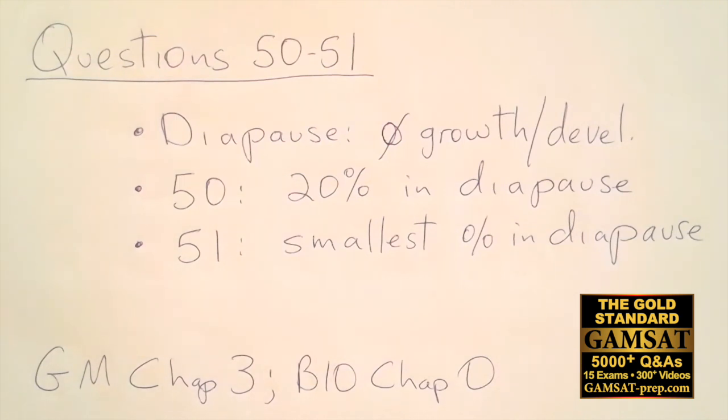Then for question 51, asking what is the largest percentage of fly population that grow and develop. Of course, 51 is asking what is the smallest percentage in diapause, because that's what we can read from the graph. And so in looking at the answer choices, answer choice A gives a percent which is around, I would say, about 55% from the graph, answer choice A.